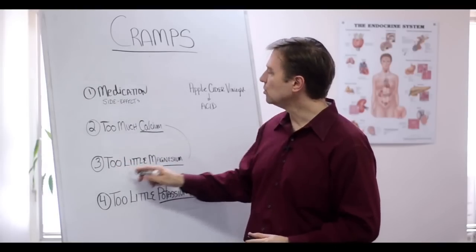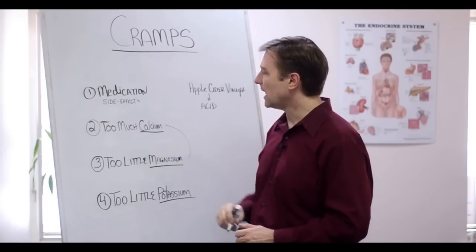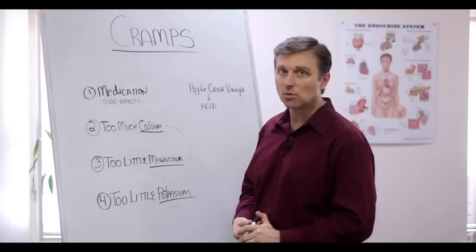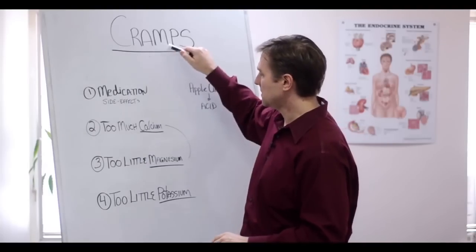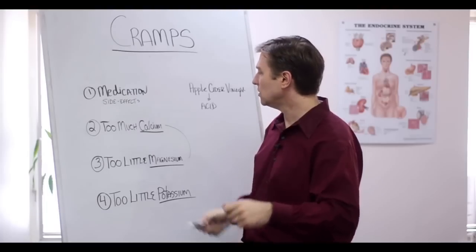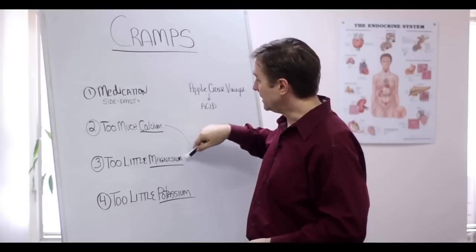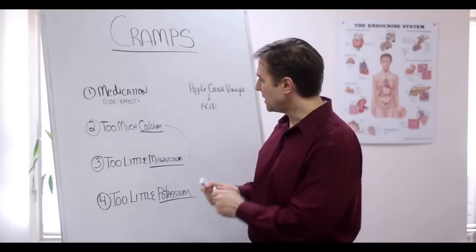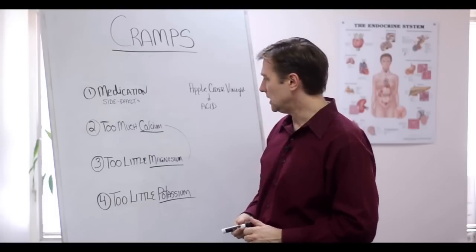Number three, too little magnesium. Magnesium is the relaxation mineral of the muscle. And that's the one that you really want to take if you have cramps. So that'll just knock it out like that. You could also take calcium magnesium. That would be good, especially if it's in a one-to-one ratio, because that's what we need.